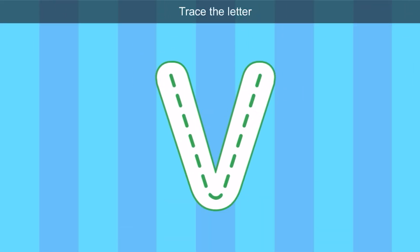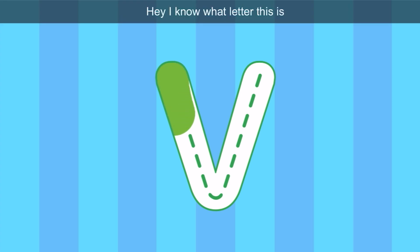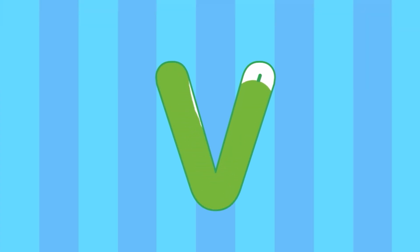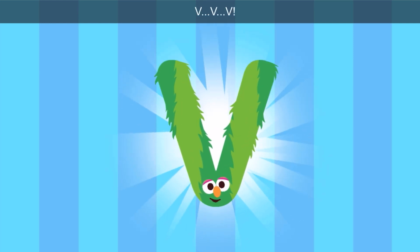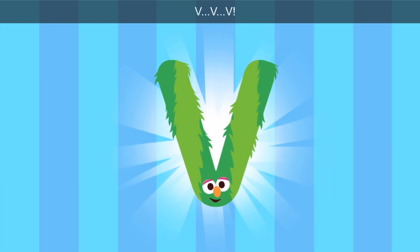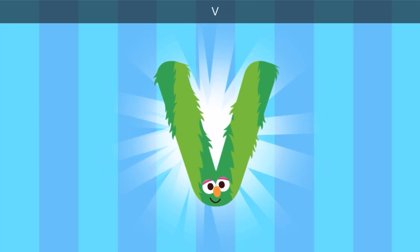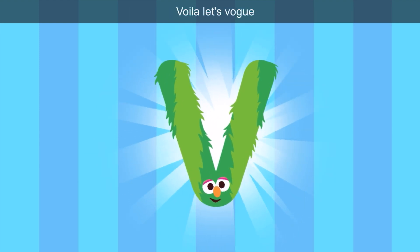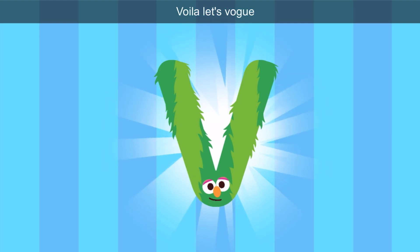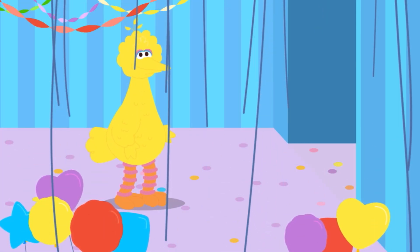Trace the letter. You know this letter? Let's trace it. I know what letter this is. Hey, look, Bird — it's the letter V. Excuse me, letter V, would you like to come to a dance party? Voila, let's vogue! Voila and vogue start with V.